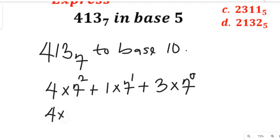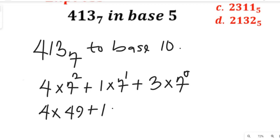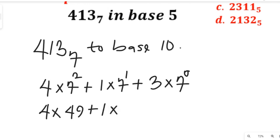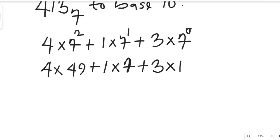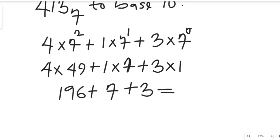So 4 times 7 squared gives us 49, plus 1 multiplied by 7, plus 3 multiplied by 1 — because anything raised to the power of 0 is 1. This gives us 4 times 49, which is 196, plus 7, plus 3. That equals 196 plus 7 plus 3, which gives us 206 in base 10.